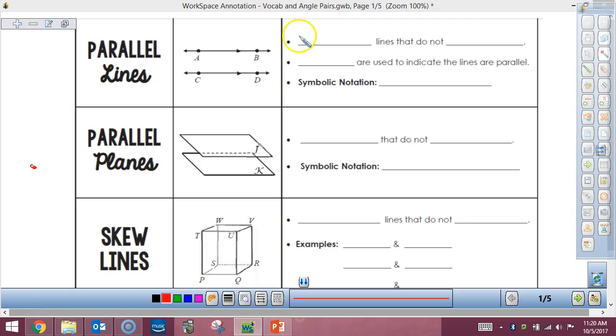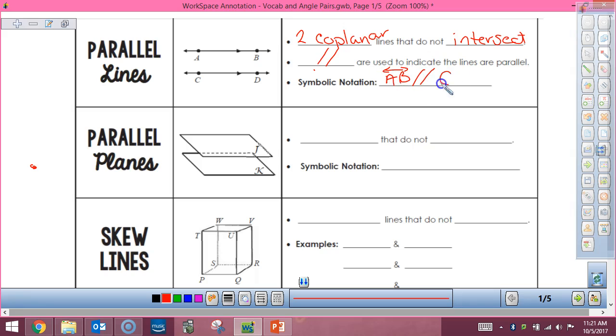So parallel lines are two coplanar lines that do not intersect. That brings us back to some vocab from the beginning again. What does coplanar mean? On the same plane. Arrows are used to indicate the lines are parallel. We use this symbol, two parallel lines, so my symbolic notation would be AB is parallel to CD.